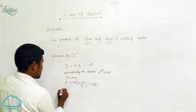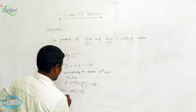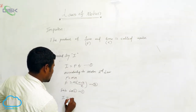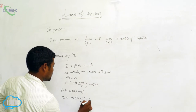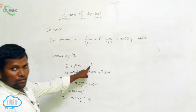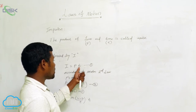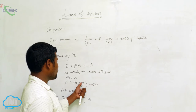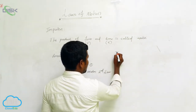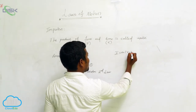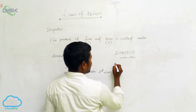Now substitute equation two into equation one. F is equal to m into (v minus u) divided by t. Substituting in place of F, the t in the numerator and t in the denominator cancel. So I is equal to m(v minus u), which gives us mv minus mu.